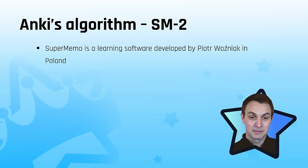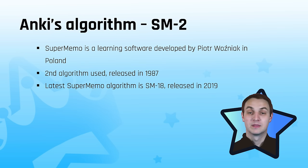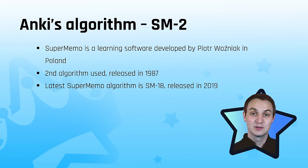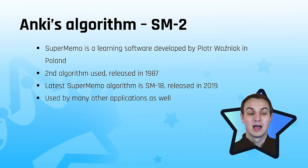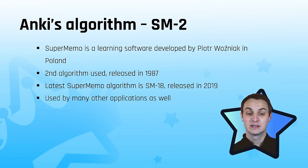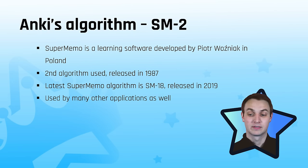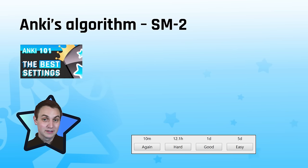SuperMemo 0 was essentially a pen-and-paper version that doubled intervals, and then SuperMemo 2 was released in 1987. The latest algorithm on SuperMemo is SuperMemo 18 — you may ask why Anki is not using that. It's a proprietary algorithm, but there are a lot of spaced repetition softwares out there using SuperMemo 2 because it's open and available. Anki has one of the better implementations of it. The Anki algorithm is based on which button you're going to press.